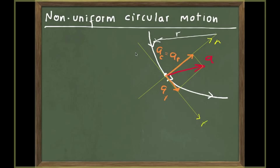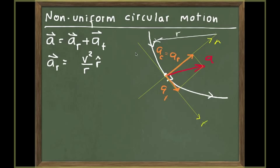The radial component of the acceleration — what we also call the centripetal acceleration — means the acceleration vector can be written in terms of the radial component plus the tangential acceleration vector. The radial component has magnitude V squared divided by R and points in the direction of the unit vector R toward the center. Notice that here we chose R as pointing towards the center, whereas previously R pointed from the center outward, giving a minus sign. With this new definition, there is no minus in front of the equation.